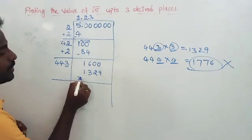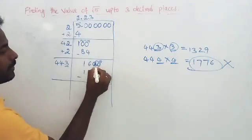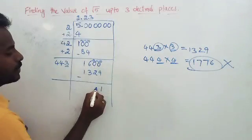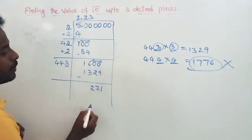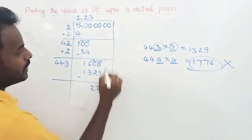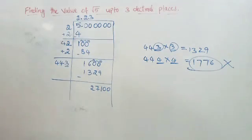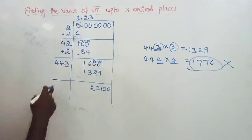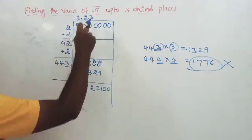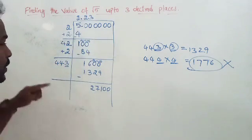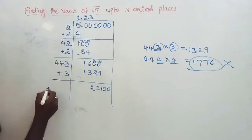We subtract: 1600 minus 1329. We get 1 in the ones place (10 minus 9), 7 in the tens (9 minus 2), 2 in the hundreds (5 minus 3) — so the remainder is 271. Bringing down two zeros gives 27100.